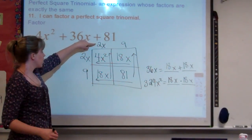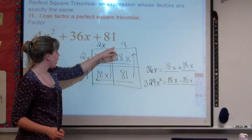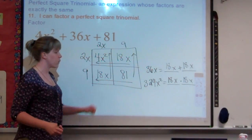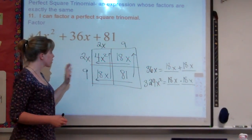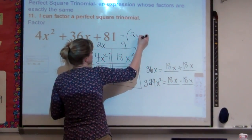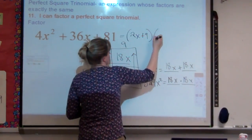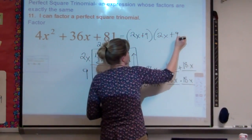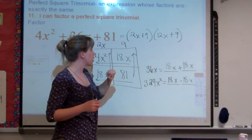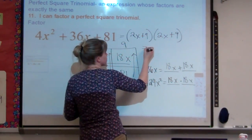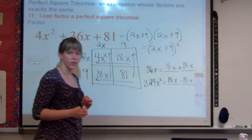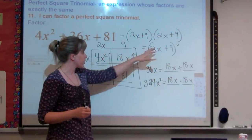We can check our box: 2 times 2 is 4, 9 times 2 is 18, 2 times 9 is 18, and 9 times 9 is 81. So our box works. Our factors of this perfect square trinomial are 2x plus 9 and 2x plus 9. Since we have the same factor written twice, we can condense this as (2x + 9) squared, because they're exactly the same.